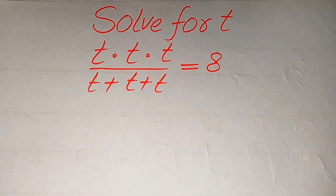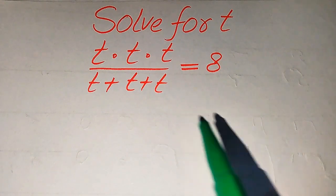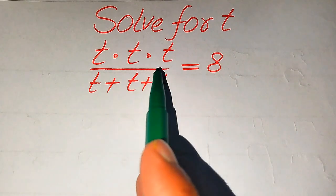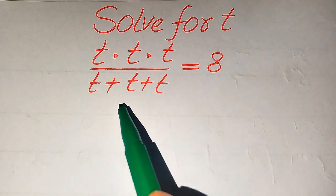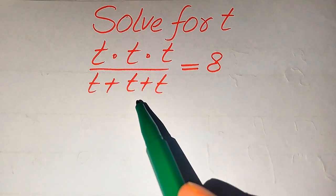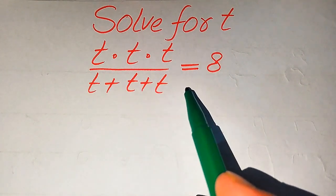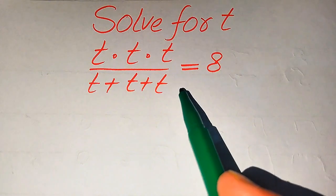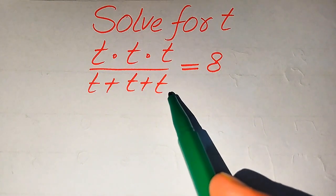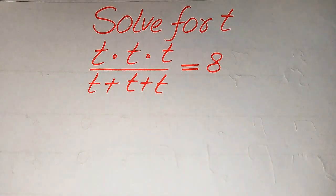Hello everyone. How to solve this problem for the values of t if we have t times t times t divided by t plus t plus t is equals to 8, and we solve this problem for the values of t.